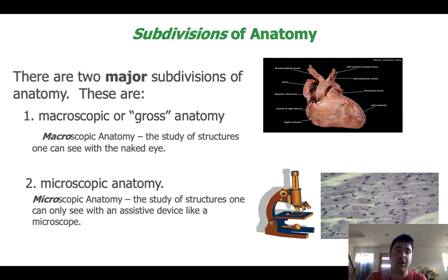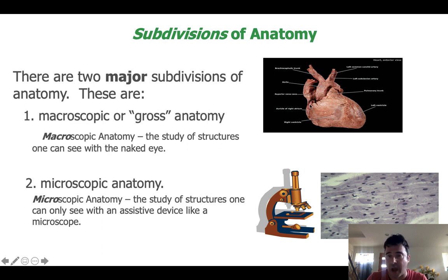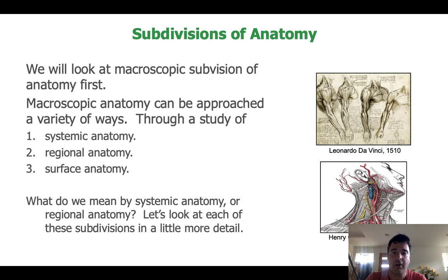Let's look at our subdivisions of anatomy more carefully. There are two major subdivisions: macroscopic or gross anatomy — structures that can be seen with the unaided eye — and microscopic anatomy — structures you need a device like a microscope to see. Here we're looking at the macroscopic features of the heart, like the aorta, apex, and left ventricle, and here we're looking at cardiac muscle tissue under the microscope. Each gives you important details, and we study both in this class.